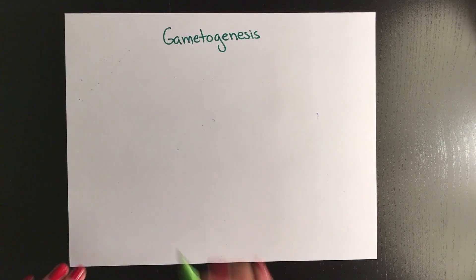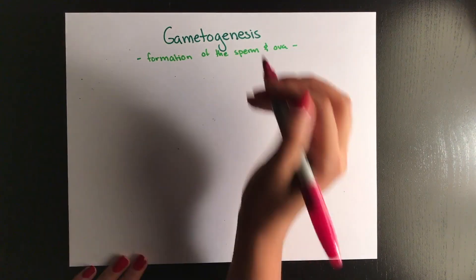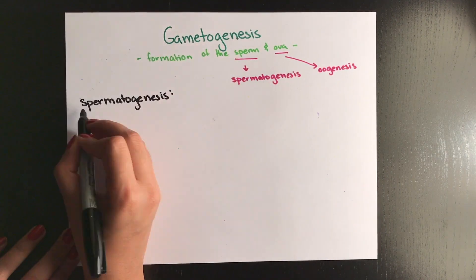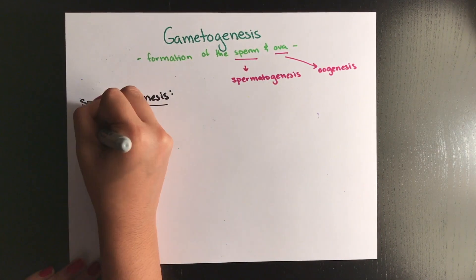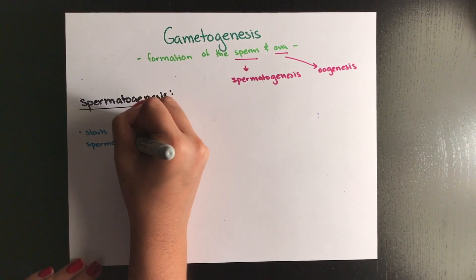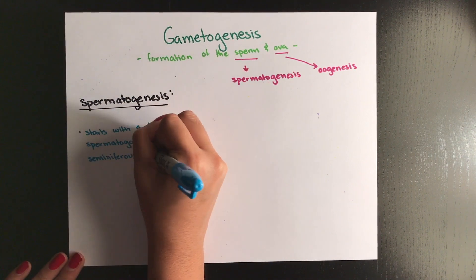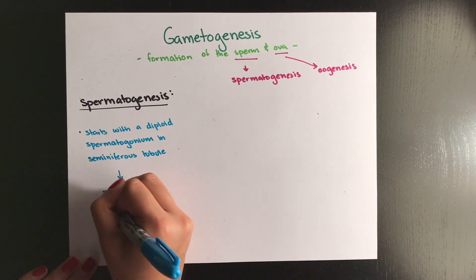The formation of sperm and ova are called gametogenesis, and the creation of sperm is called spermatogenesis. The process of spermatogenesis occurs with the spermatogonium, and this occurs within the seminiferous tubules in the testes. The spermatogonium are initially diploid, and they become four haploid sperm cells after meiosis.